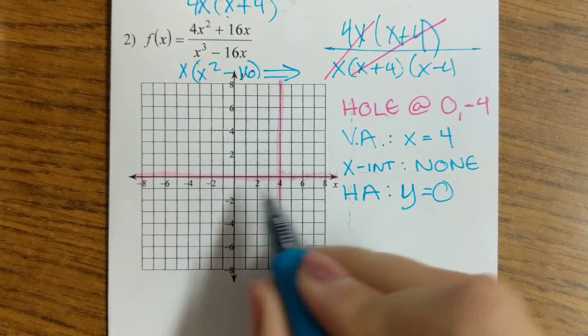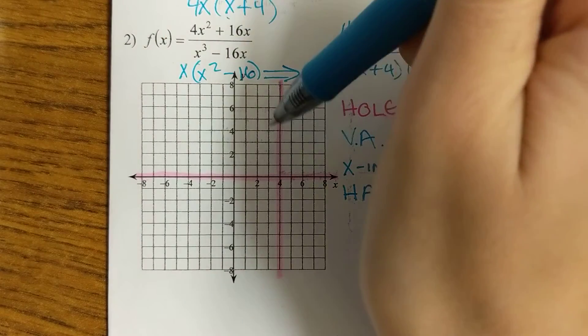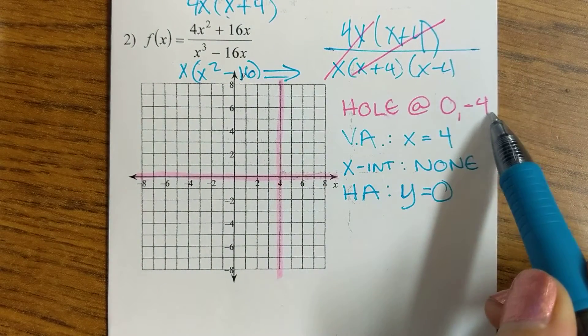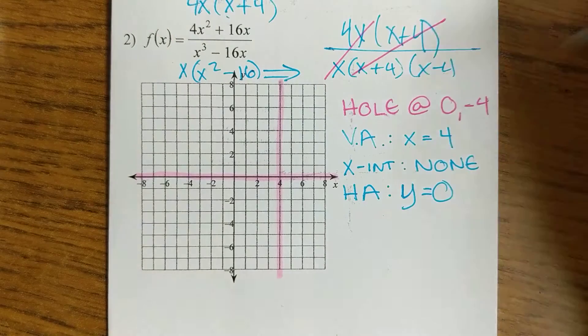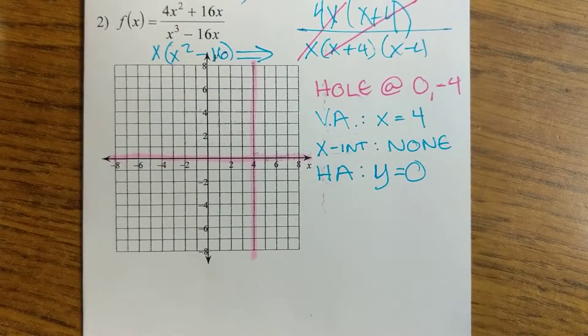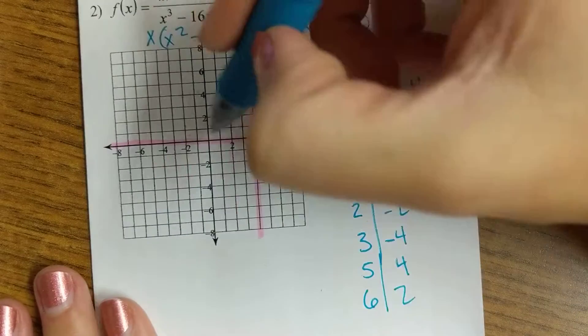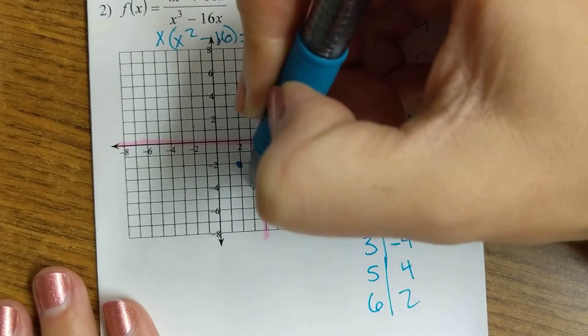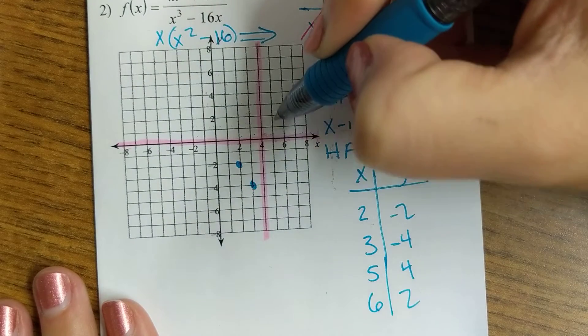All right, so now I'm going to plug in two points to the left of the vertical asymptote and two points to the right. Obviously, I'm not going to pick any of my holes, so I'm going to do that work now. All right, so these are my values: 2, negative 2, and then 3, negative 4. This one goes 5, 4.